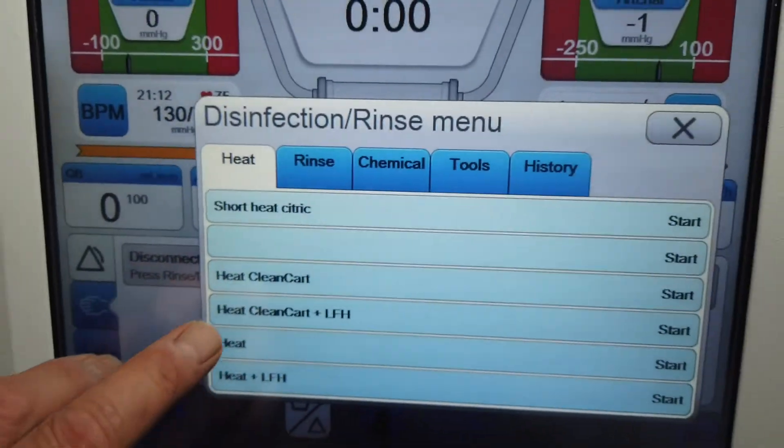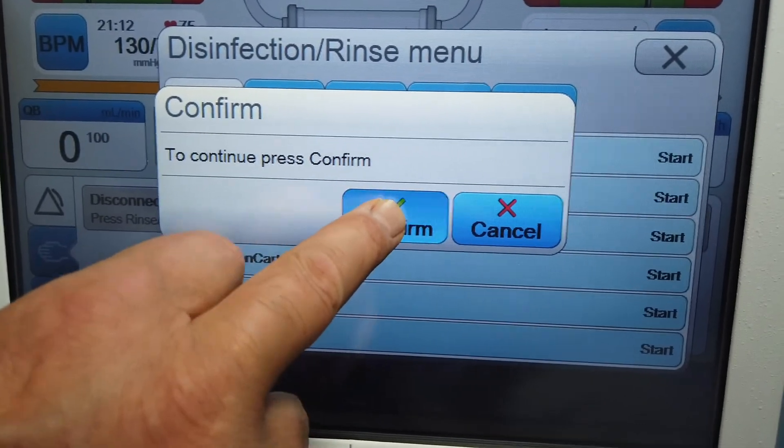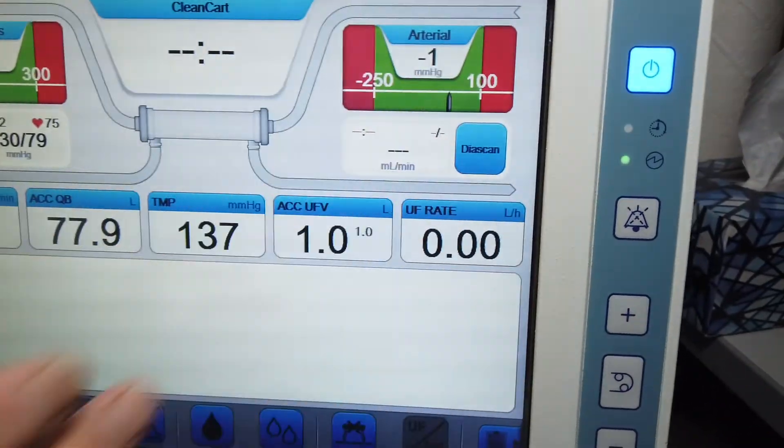Today, I'm going to do a heat clean cart. I press that. I go ahead and confirm it. Once it's confirmed, I can close off this menu.